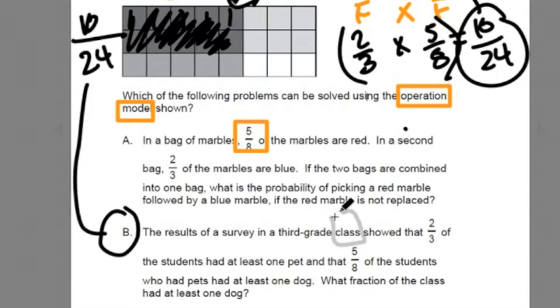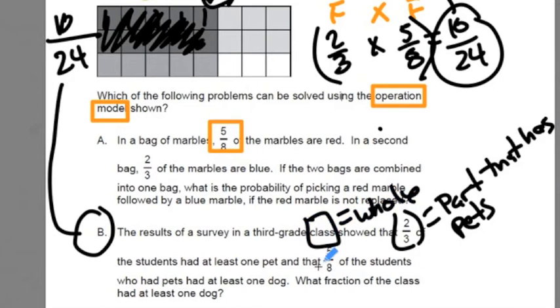The class is the whole. Out of the whole, 2 thirds have pets, the part that has pets. Now out of that part, 5 eighths are the part that has dogs.